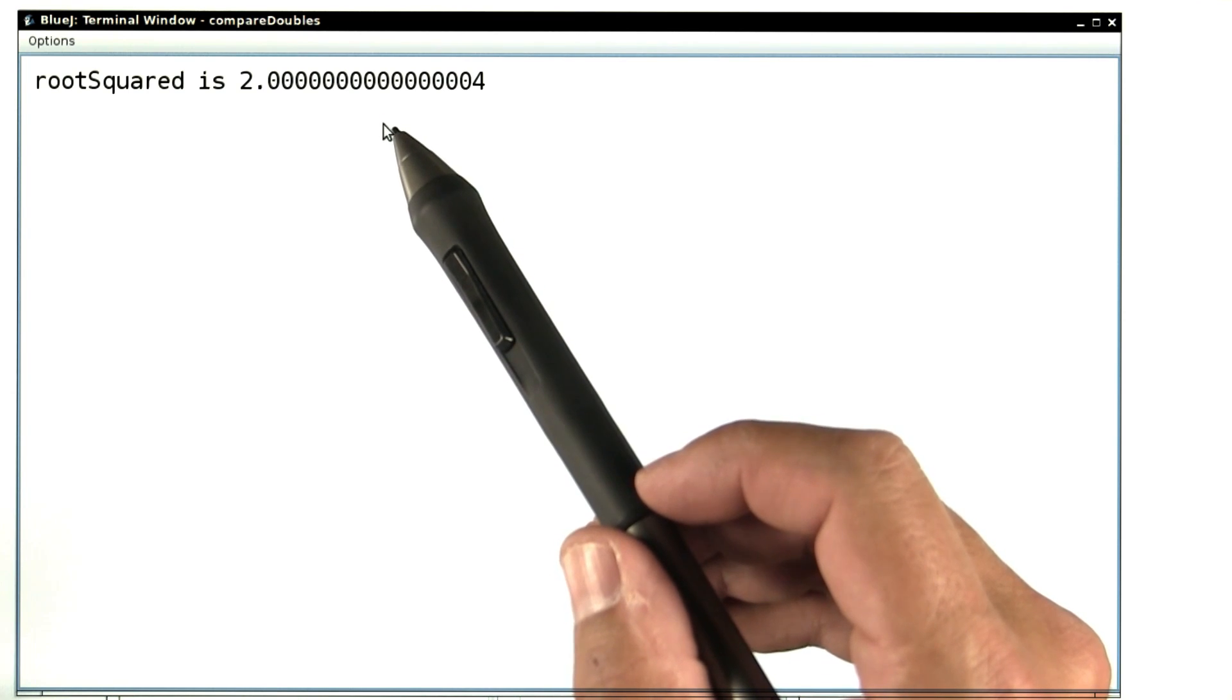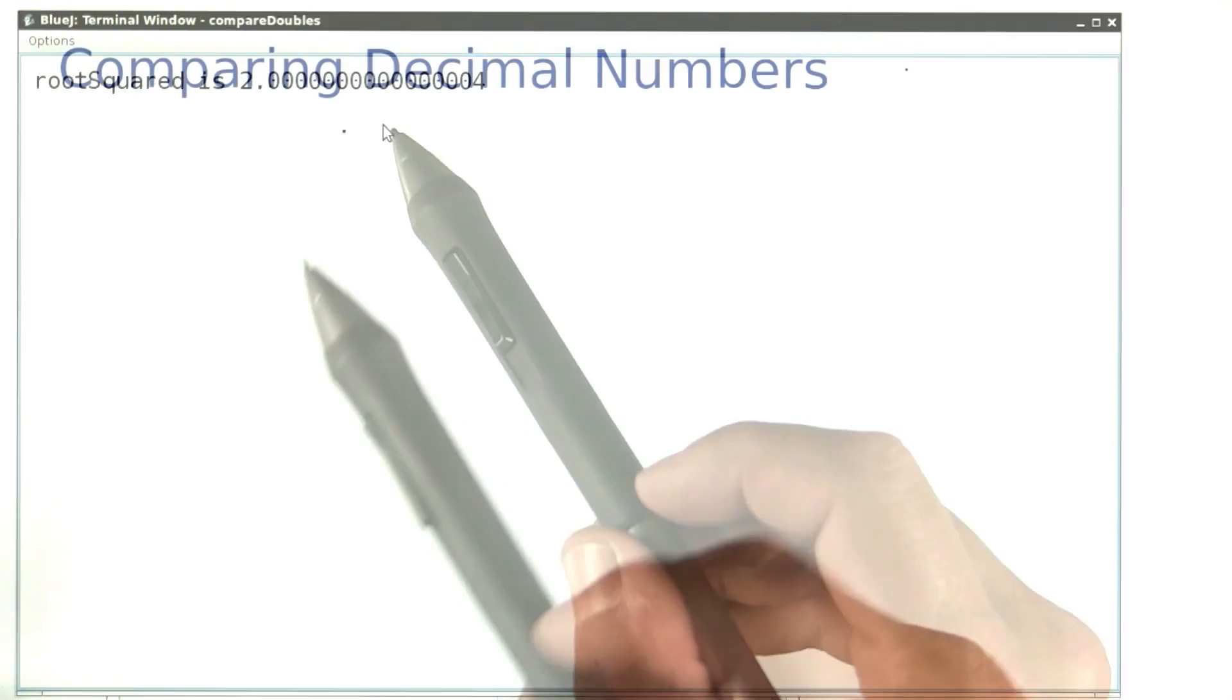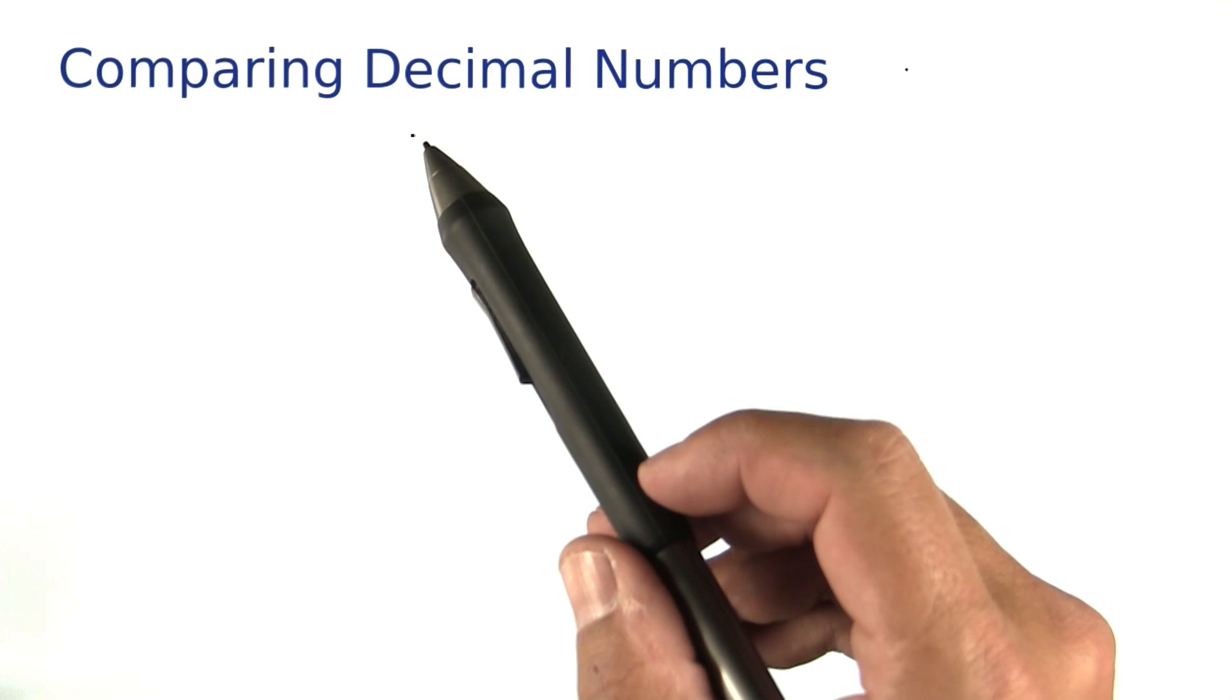These errors are unavoidable because decimal numbers cannot store an infinite number of digits and somewhere some round off is going to happen. So when you compare two numbers with fractional parts, you're never interested in whether they're exactly the same. You want to know are they close to each other.